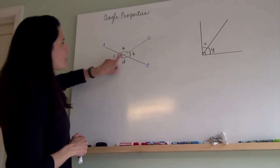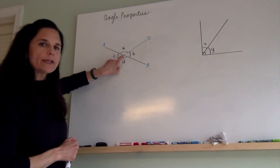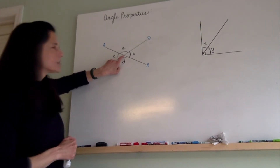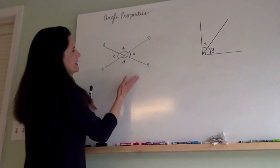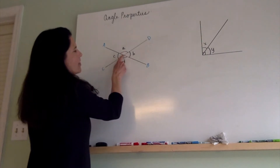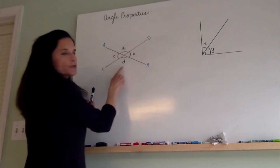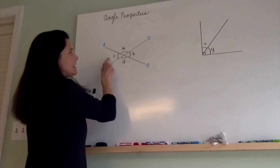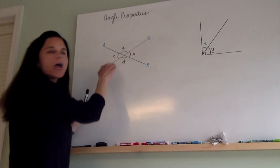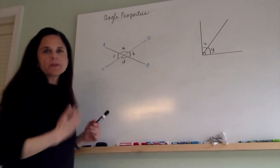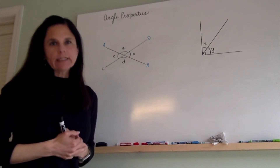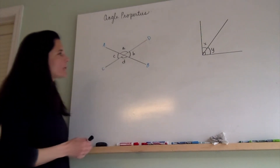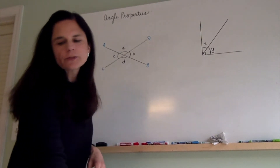Secondly, we learned that all of the angles at a point add up to 360 degrees. So what that means is that all four of these angles — angle A, angle B, angle D, and angle C — all add up to be 360 degrees in total. So that was the second angle property that we learned.